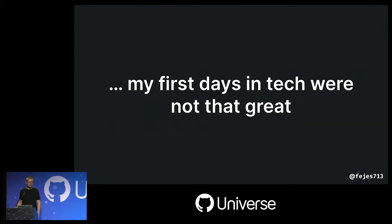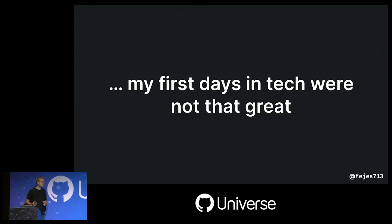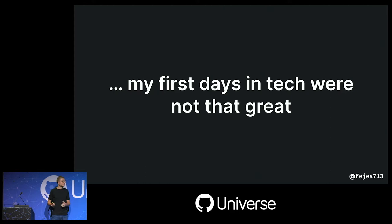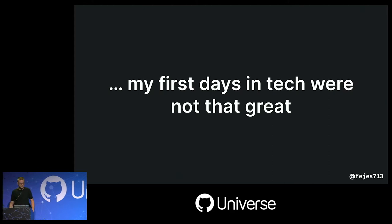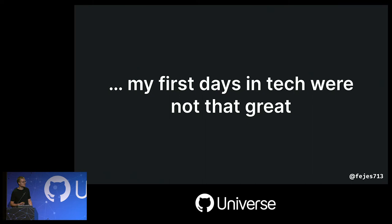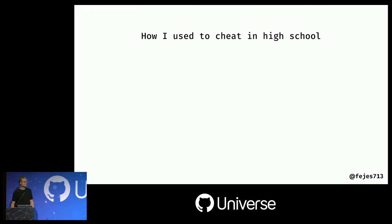Even then, my first days in tech were not that great. I had to pick a high school, and for a long time I wanted to be a Lego brick designer. But my parents didn't know which school for that, and back in Serbia that school didn't even exist. So I had to pick on my own. Luckily there was a computer science experimental class — just 20 of us. But it wasn't great either. I started and had to cheat because I wasn't doing well.